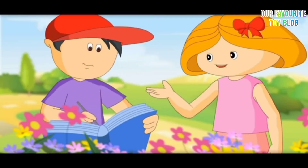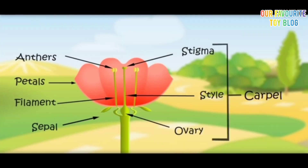Let us revise now. Male parts are anthers and filaments. Female parts are stigma, style, and ovary. When pollen from the anthers falls on the stigma, it goes down to the ovary where a reaction happens and fruit is made. Now I can also make fruit from flowers — I would take the anther and put it on the stigma and fruit would be made.